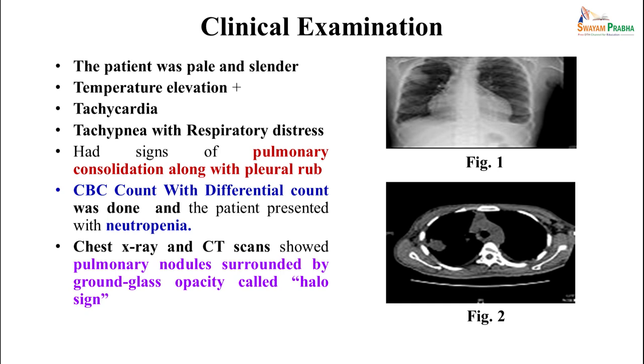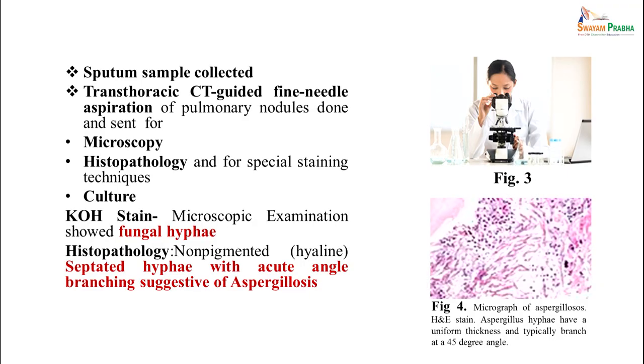CBC showed neutropenia. Chest X-ray and CT scan revealed pulmonary nodules along with ground glass opacity, also called halo sign. Sputum was collected, and along with that we also collected a transthoracic CT-guided fine needle aspiration from the pulmonary nodules, to get a sample from the site of infection. These were sent for microscopy and culture.